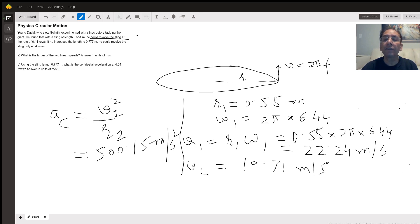Then the second case is r2 omega2, and if you plug in the value of omega2, the velocity works out to be 19.71 meters per second.